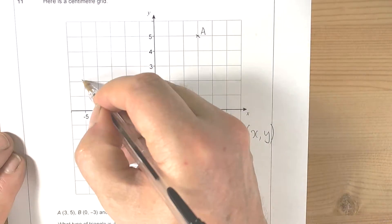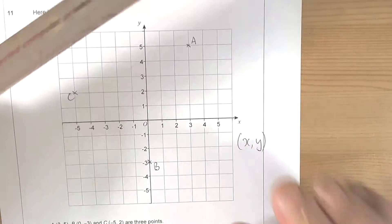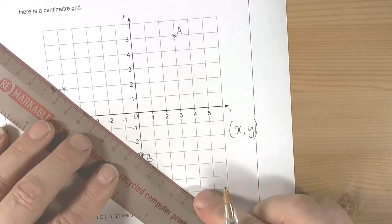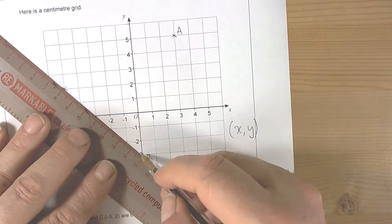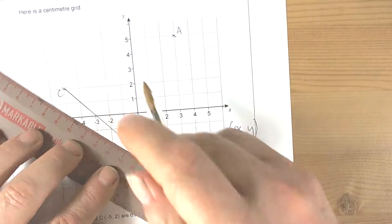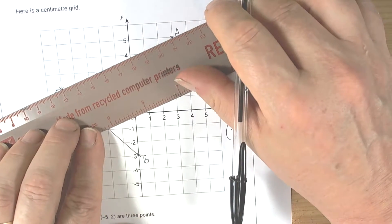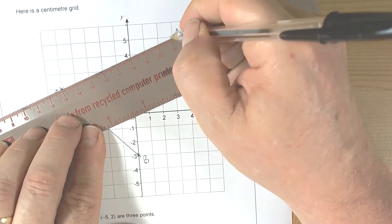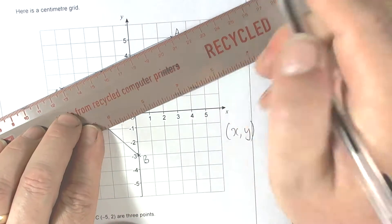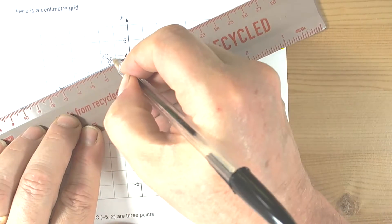Then we get our ruler and connect up the points. We notice the length of that line is eight centimeters.